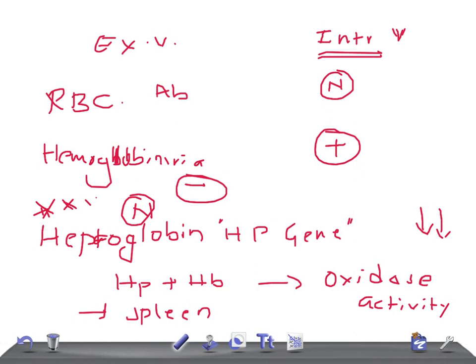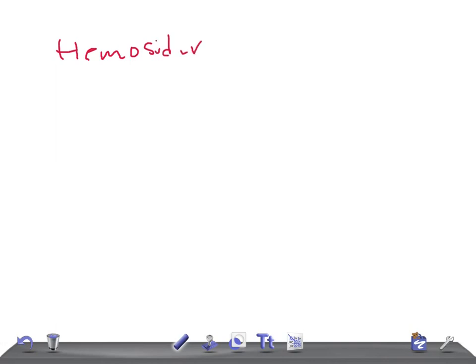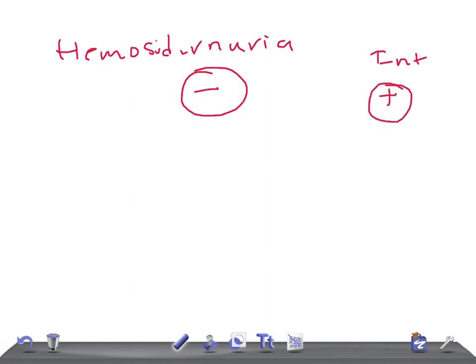So to summarize: haptoglobin is low in intravascular hemolysis and normal in extravascular hemolysis. Regarding hemosiderinuria, you do not see it in extravascular hemolysis, but in intravascular hemolysis you do see it — because of the release of hemoglobin, which leads to hemosiderinuria.